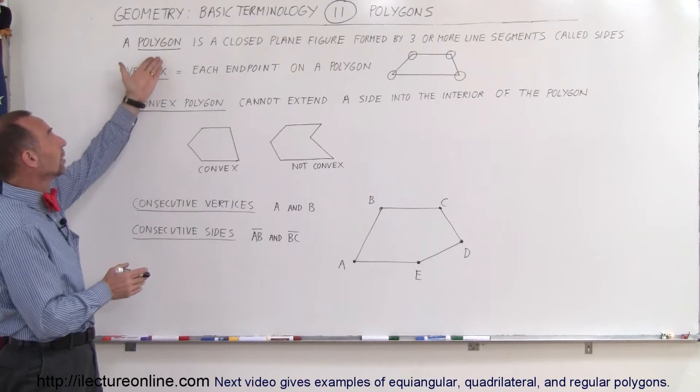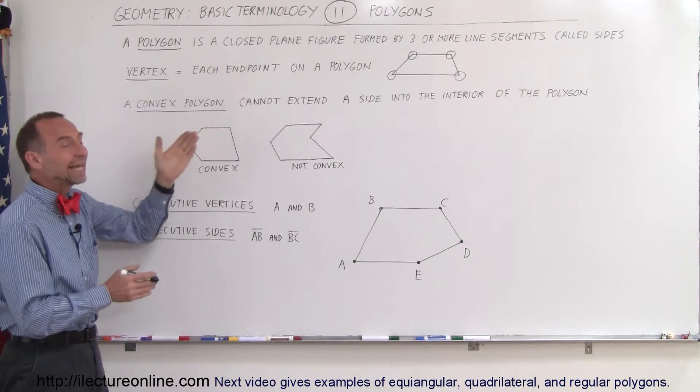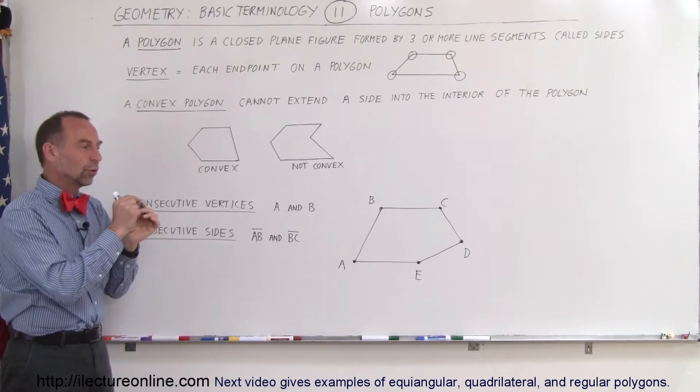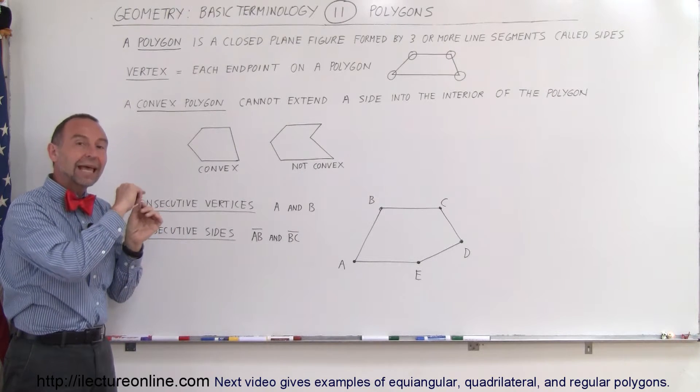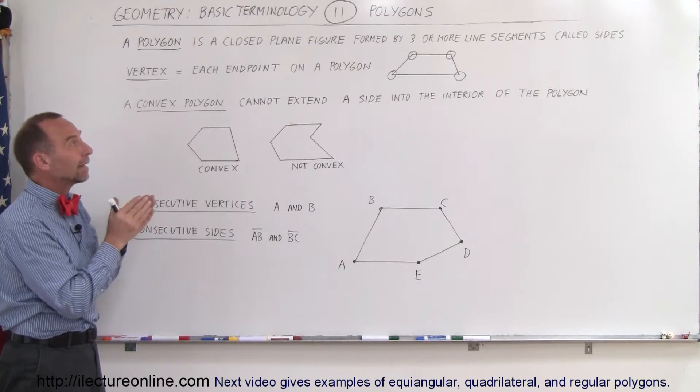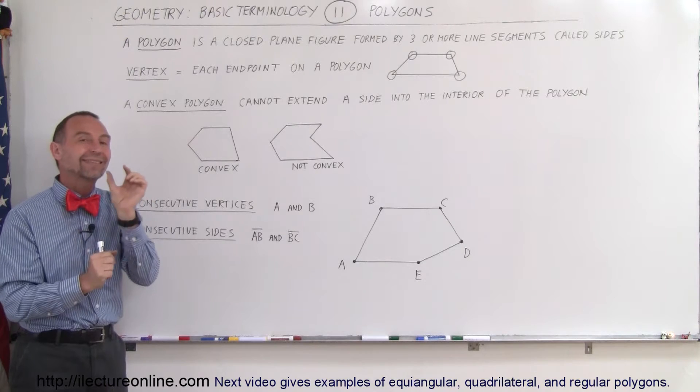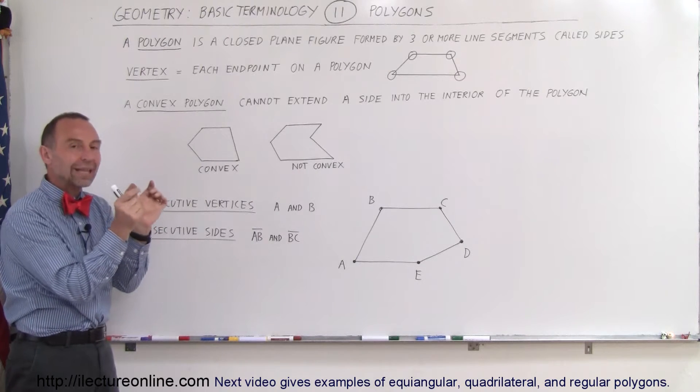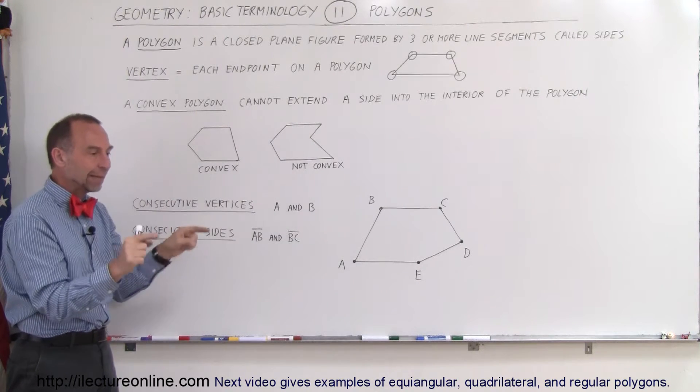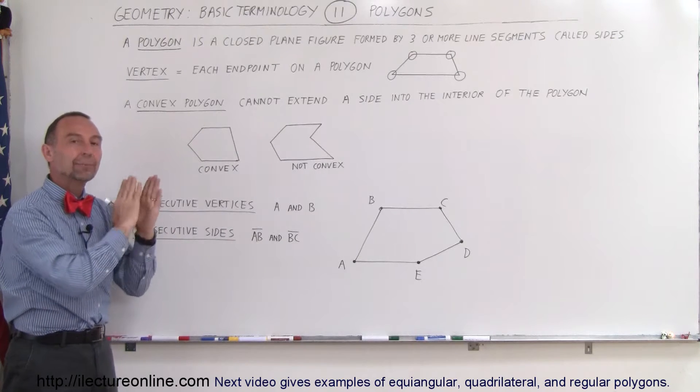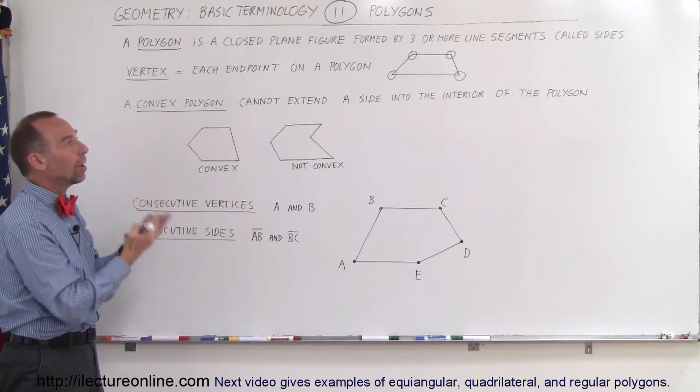So first of all, the definition of a polygon is that it's a closed plane figure, and that's important. So it is a closed plane, meaning it has a perimeter. Not only that, it is formed by three or more line segments. So it's formed by straight line segments that form a complete enclosure in a plane format. That's called a polygon.